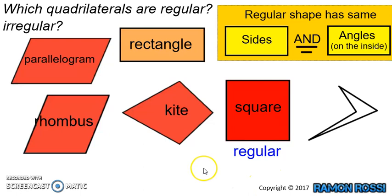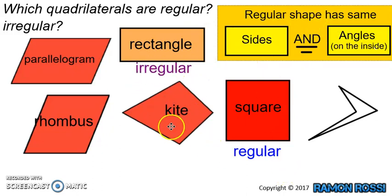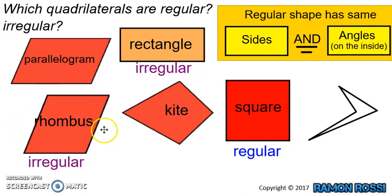Now let's see why these other shapes are irregular. The rectangle's sides are not all the same length, even though it has all its angles the same — so it doesn't tick both boxes and it is irregular. The rhombus is irregular not because the sides are different — it ticks that box — but because the angles on the inside are different.